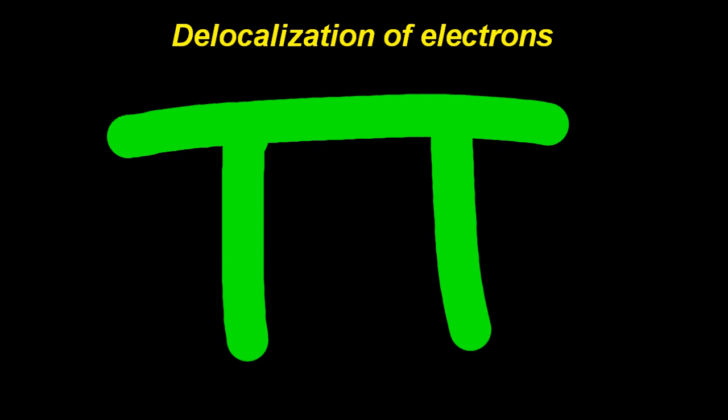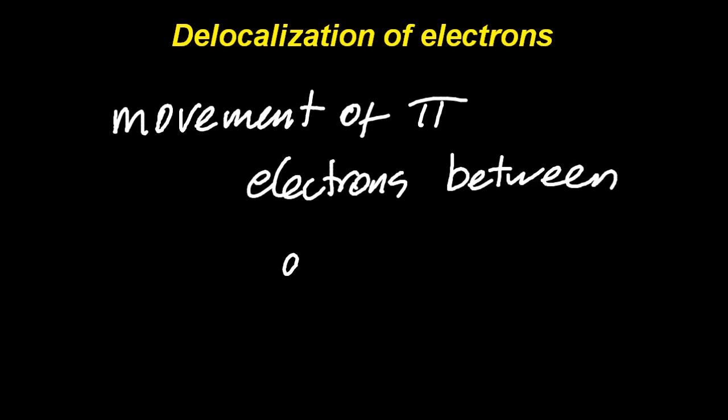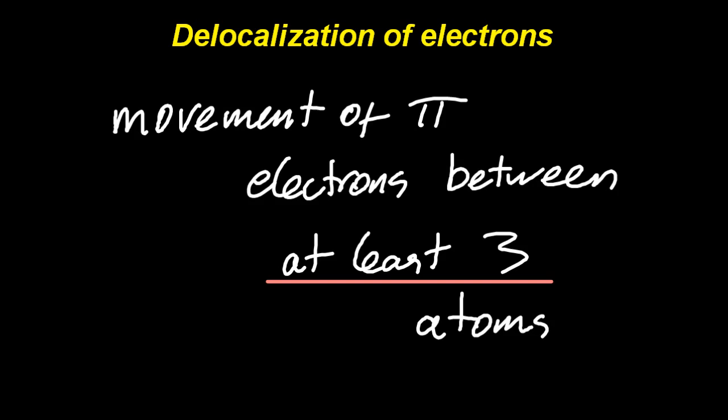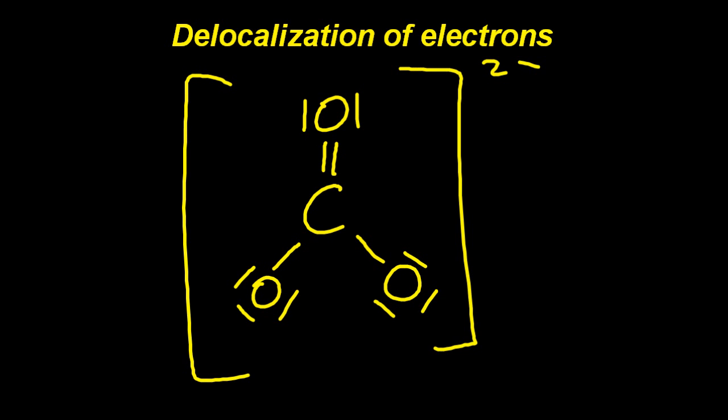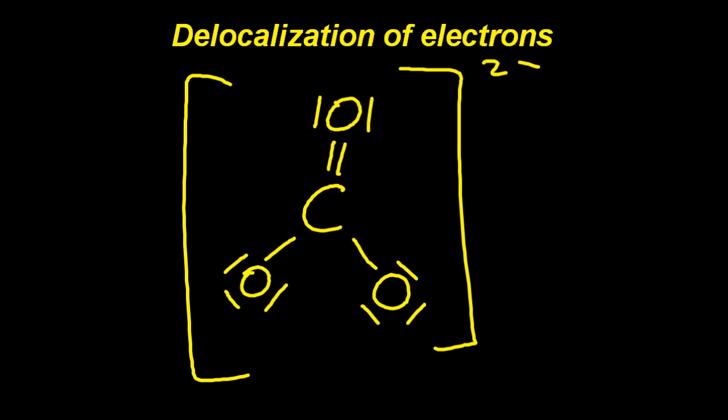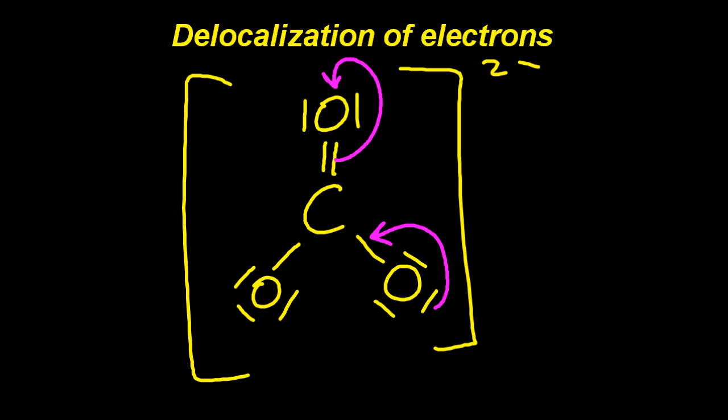Pi. Pi is to do with the delocalization of electrons. It's the pi electrons, not the sigma ones. I taught this one for years. It's the movement of pi electrons between at least three atoms. I always used to miss that last bit out. It has to be at least three atoms. Carbonate ion is a classic example. There are three resonant structures, the same one rotated by 120 degrees. And there's a couple of curly arrows.